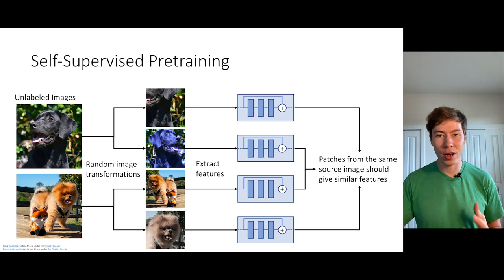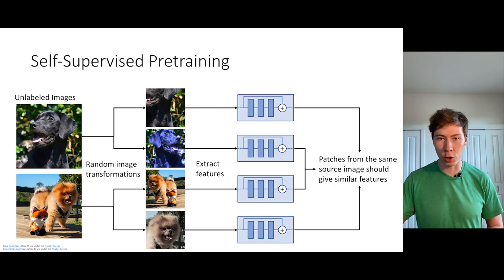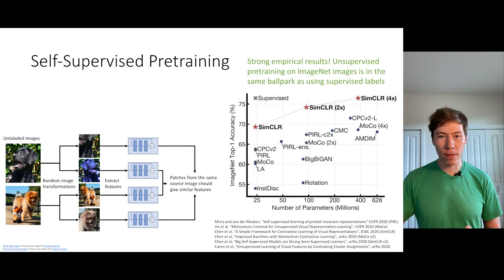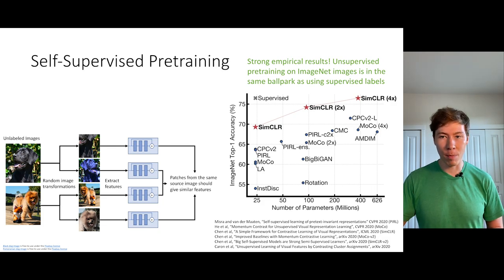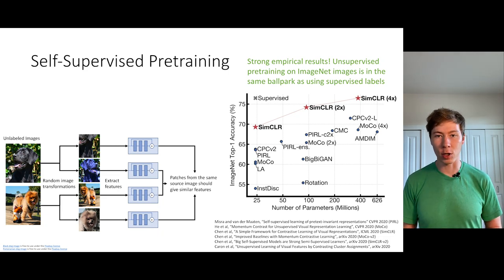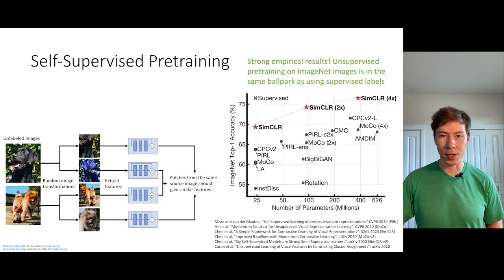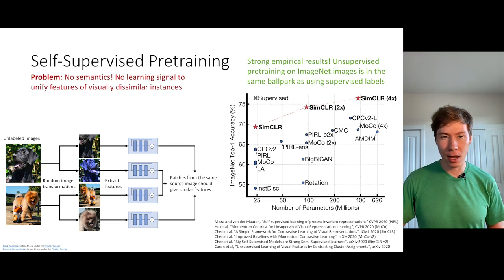There are many different concrete ways this has been instantiated, but that is the general flavor of the learning mechanism many of these approaches rely on. These self-supervised approaches have become very performant and given really strong empirical results on ImageNet in the past year. The general trend is that we can now learn visual representations on unlabeled ImageNet images that perform almost as well on downstream tasks as using the ImageNet labels. Even so, there are a couple of aspects of these methods that I find somewhat unappealing.